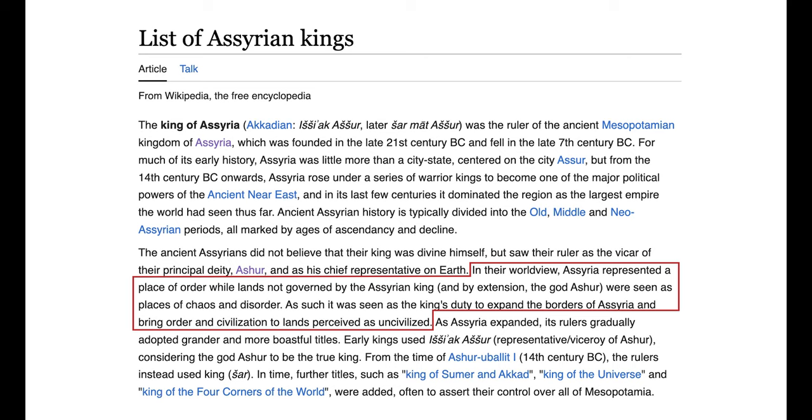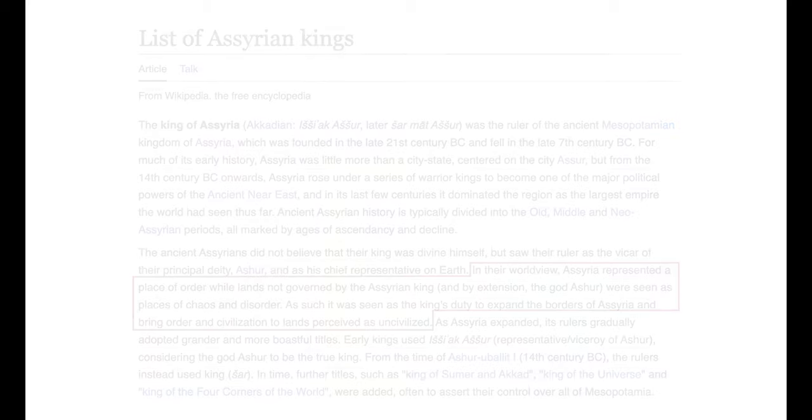What they did was they would ship small groups of conquered nations all over the rest of the empire, just breaking up any potential uprisings by never letting any significant number of like-minded people get together to fight back. Additionally, let me read you just a quick excerpt from Wikipedia. In their world view, Assyria represented a place of order, while lands not governed by the Assyrian king, and by extension the god of Assyria, were seen as places of chaos and disorder. As such, it was seen as the king's duty to expand the borders of Assyria and bring order and civilization to lands perceived as uncivilized. Sounds like history is repeating itself more than a few times, right?